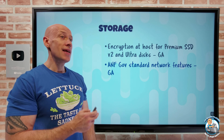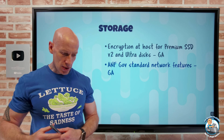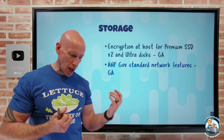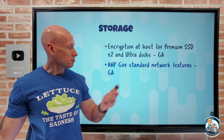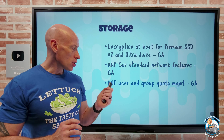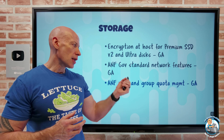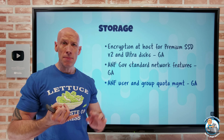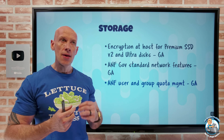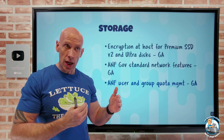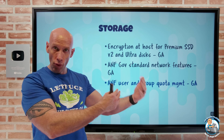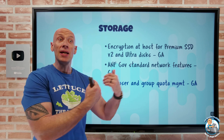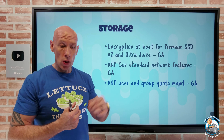Azure NetApp Files in Gov regions now has standard networking features: NSG and UDR support, 64,000 routes, site-to-site VPN, ExpressRoute, Virtual WAN, and private link service endpoints. Also for Azure NetApp Files in regular regions, user and group quota management has gone GA. For SMB, NFS, and dual-type volumes, you can set a default user quota and override it with individual user quotas. For NFS volumes, you can also use group-based quotas with a default and per-group overrides.